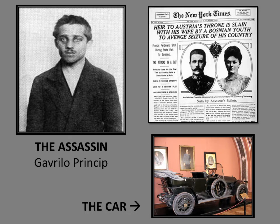Here is a picture of the assassin, Gavrilo Princip, a Serbian nationalist and member of the Black Hand. The bottom picture shows the car the Archduke Ferdinand and his wife Sophie were riding in when they were shot. On the top is the New York Times headline proclaiming their deaths — showing that this was worldwide news, reaching all the way to New York.